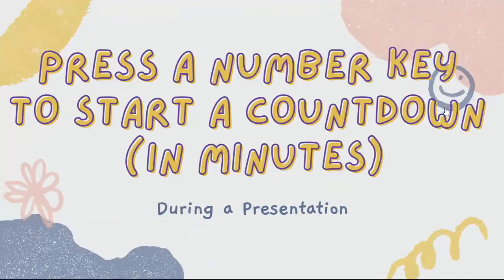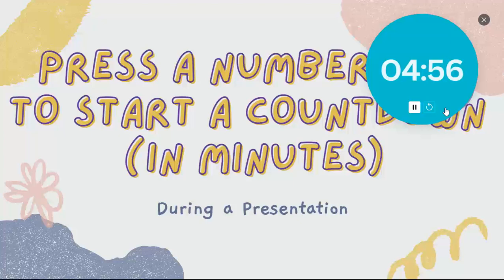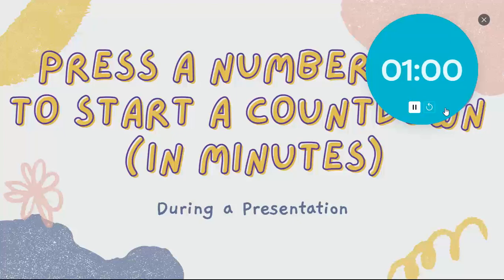Here's one that I think a lot of people are going to be interested in. If you need a timer during your presentation in Canva, you just have to hit a number key. So if I need a timer for five minutes, I'm going to hit the number five and a timer is going to pop up in the top right. If I want a timer for nine minutes, I'll hit the number nine. If I need a timer for one minute, I'm going to hit the number one.